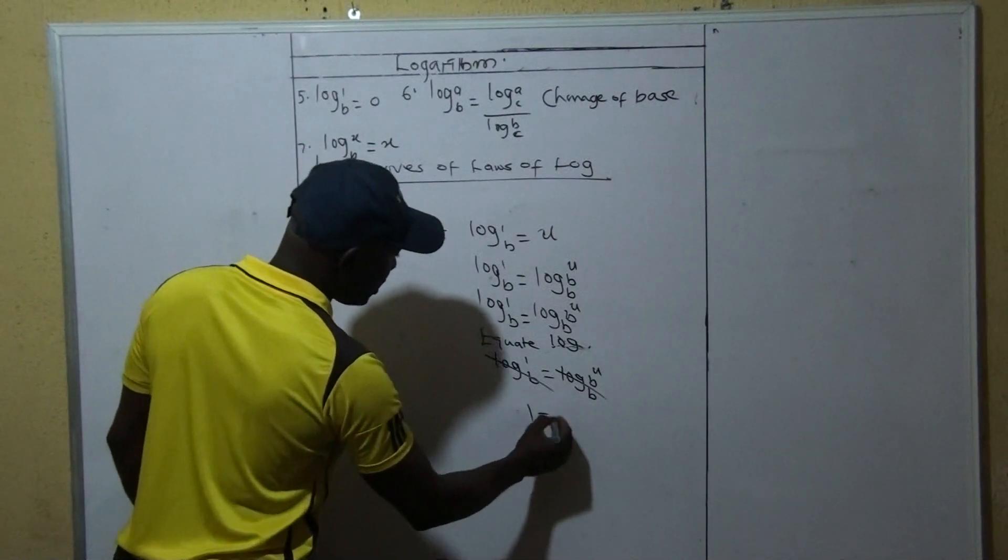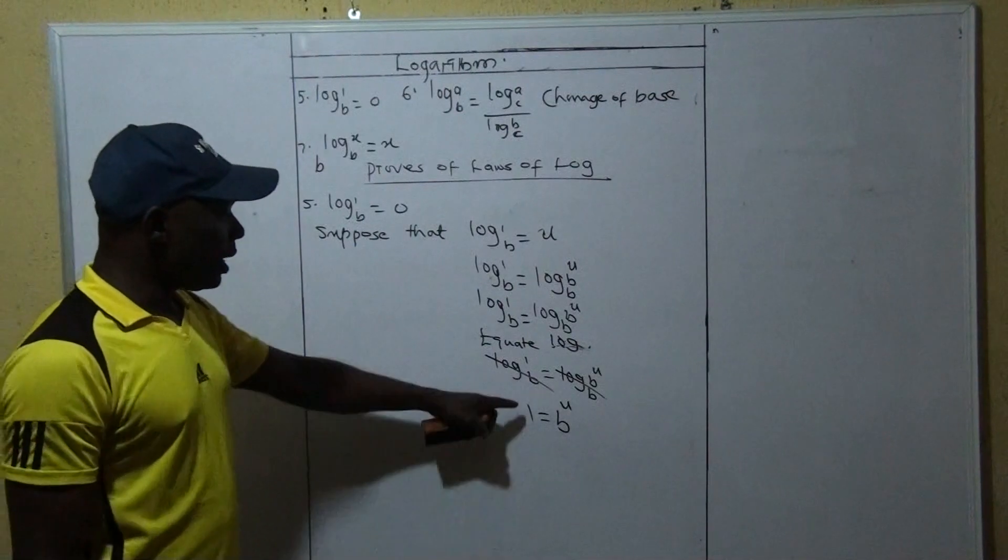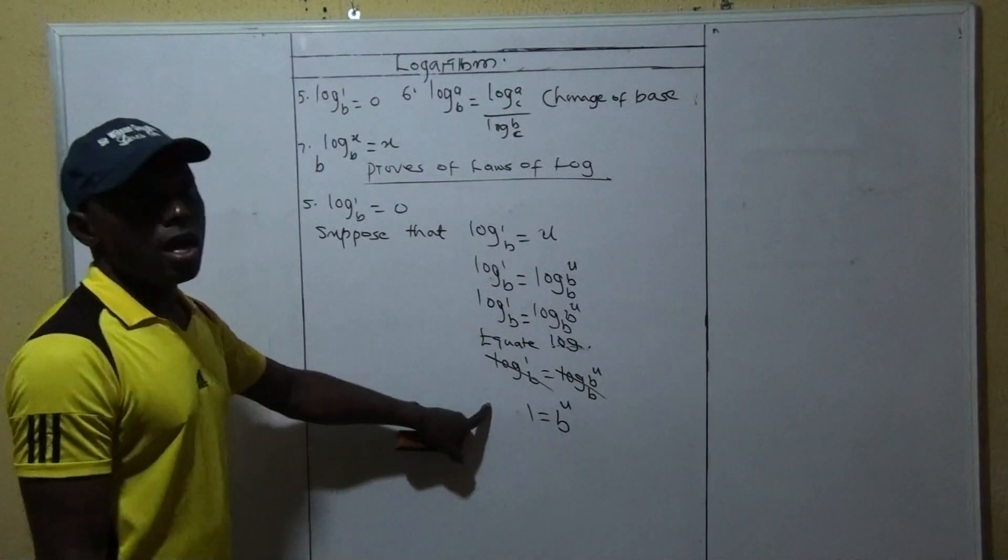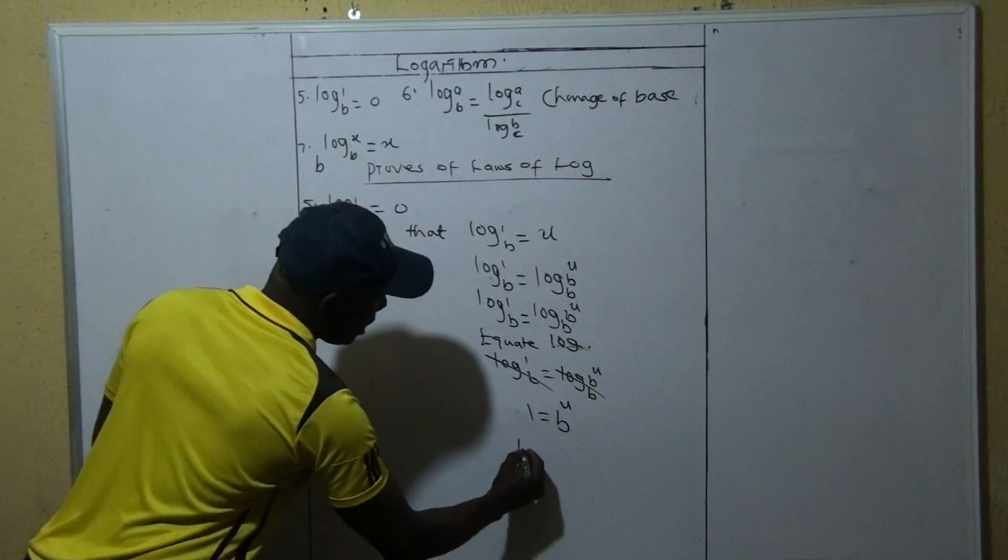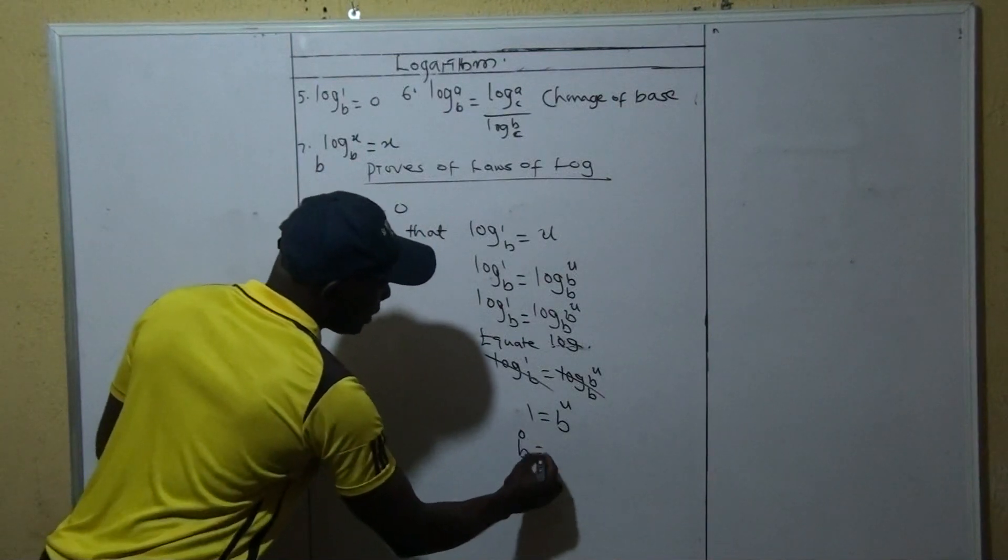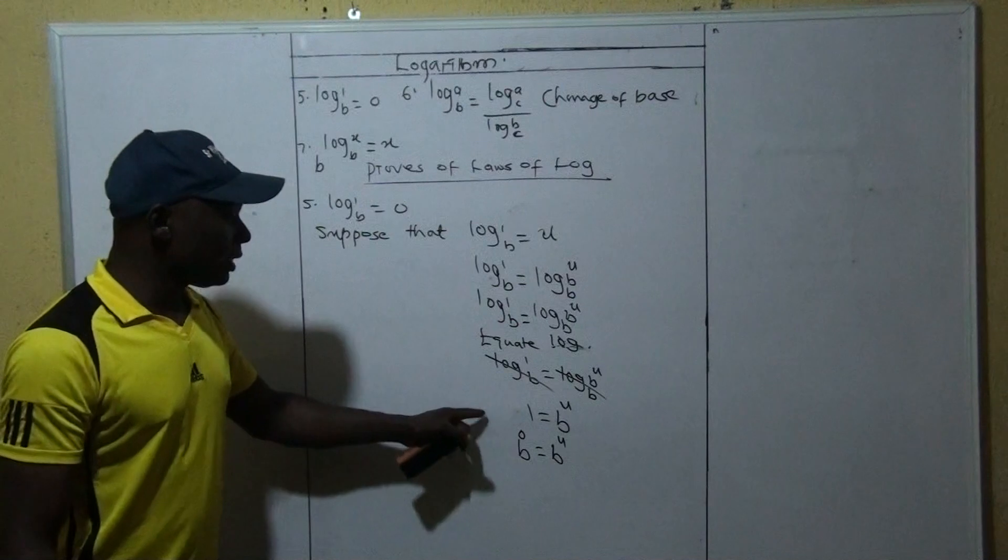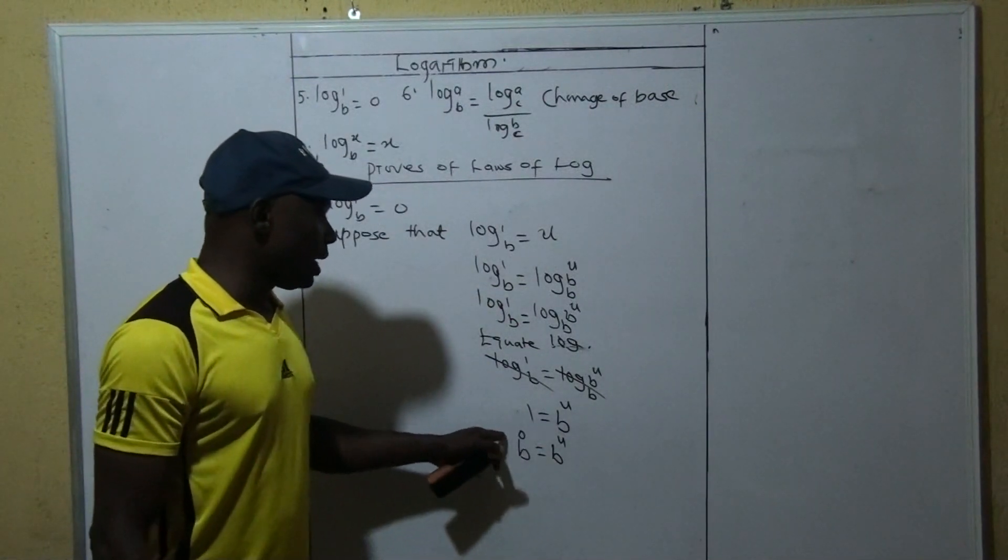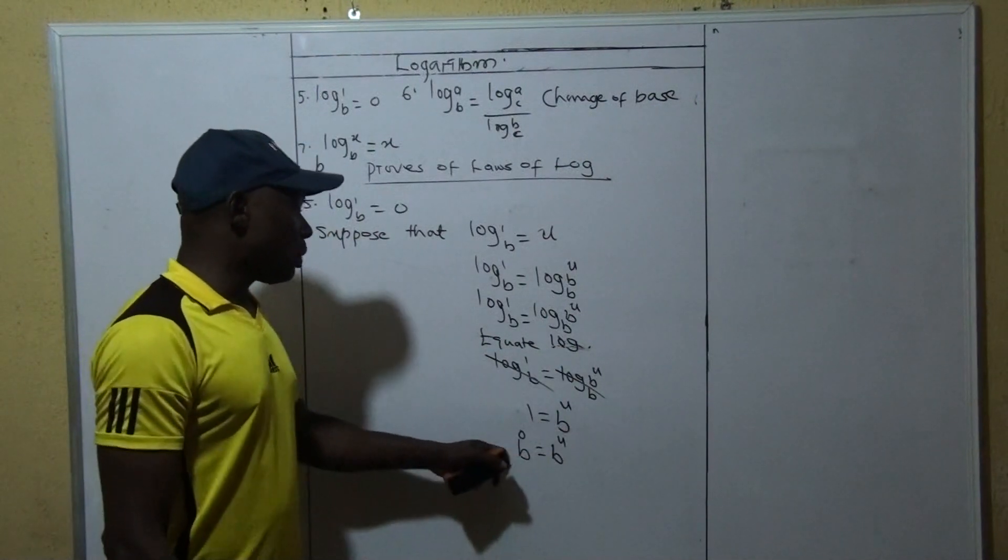From the law of indices, in order to also prove our fact here, we can say since this one is 1, we can say this side is B raise to power 0 is equal to B raise to power U, because we know that anything raise to power 0 is 1. The fact that we use B here is because what we are having on the right hand side is B.